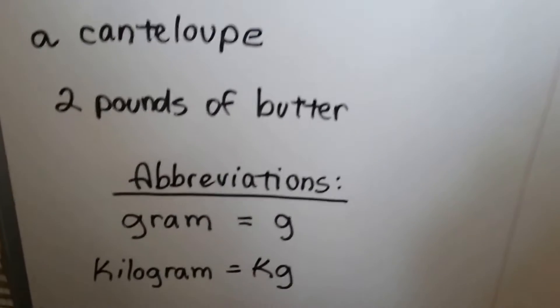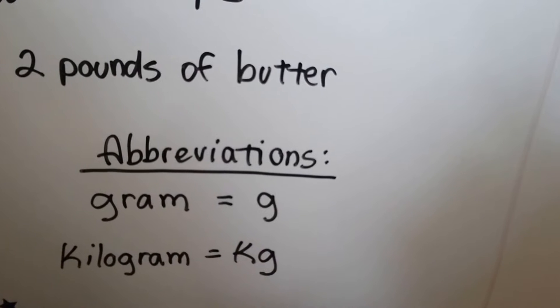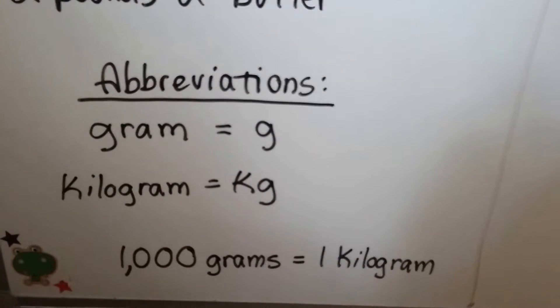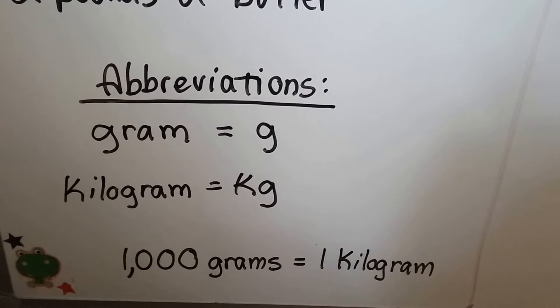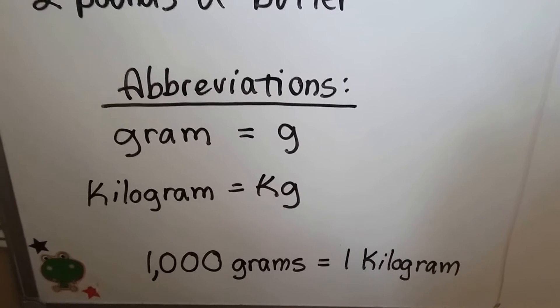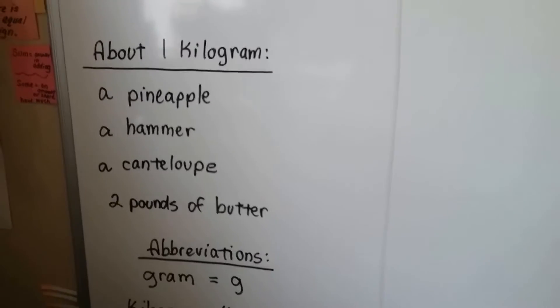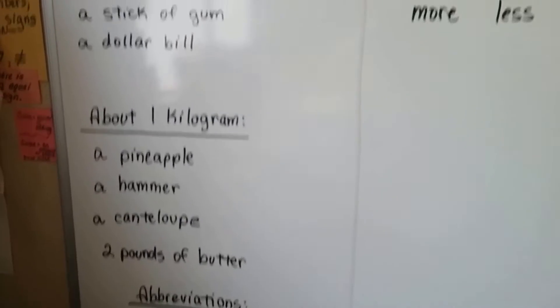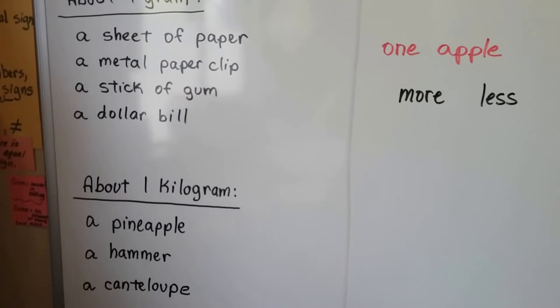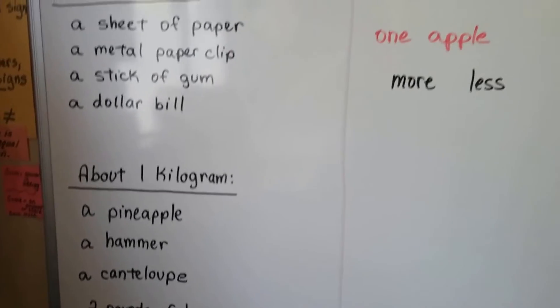And the abbreviations are gram is just a g and kilogram is kg. There's a thousand grams in one kilogram. A thousand grams equals one kilogram. So we know the kilogram is the heavier one because that would be the hammer and the gram would be the paper clip or stick of gum. So we know the kilogram is heavier.